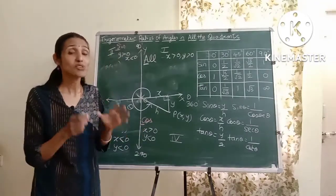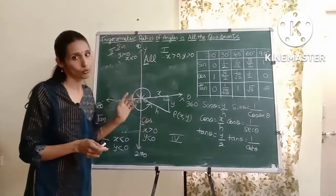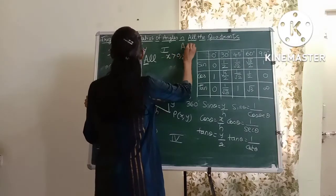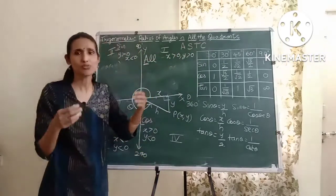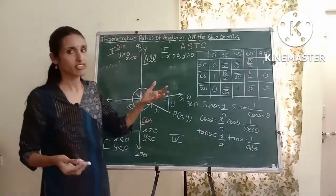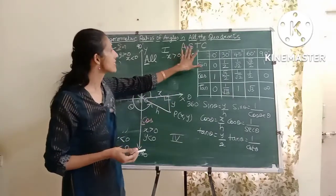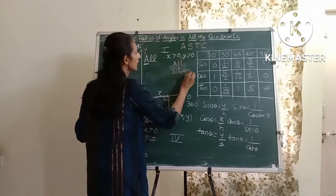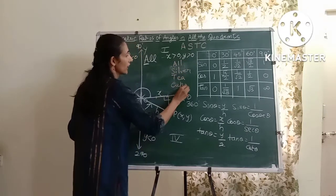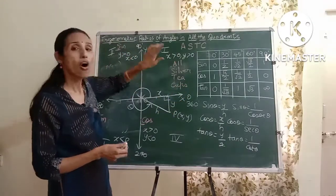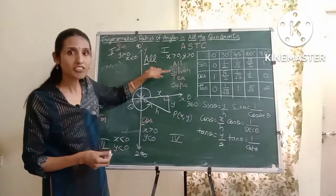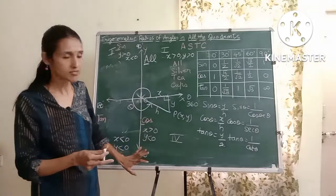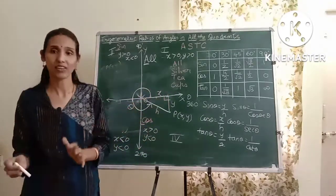This is how the signs of all the ratios change in the four quadrants. You can easily remember it using the mnemonic A, S, T, C — 'All Silver Tea Cups.' In the first quadrant all ratios are positive, in the second quadrant only sine and cosec are positive, in the third quadrant tan and cot are positive, and in the fourth quadrant cos and sec are positive.